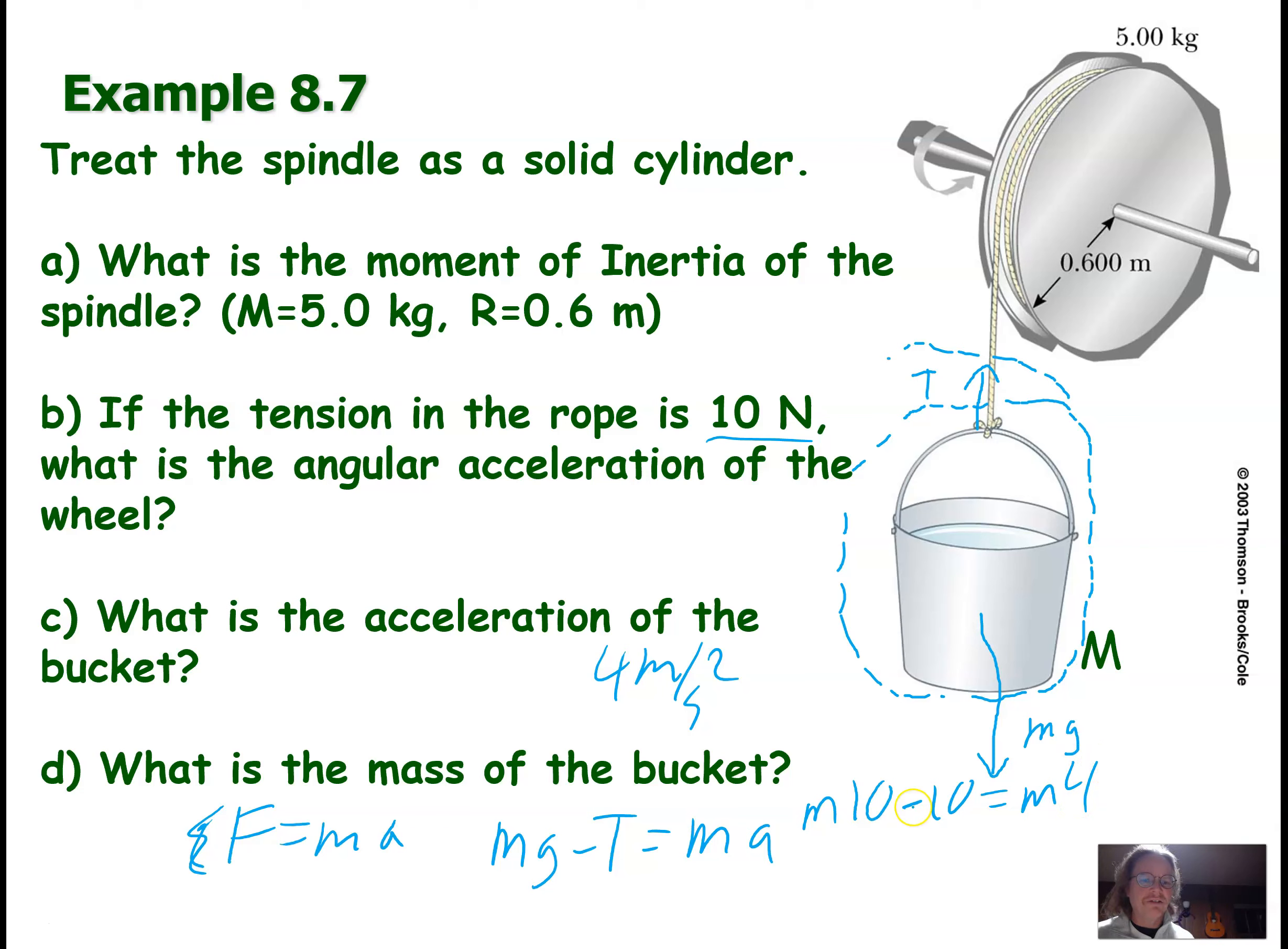Alrighty, so what I'm going to do is add the 10 to that side, subtract the M4 over here. So I've got an M6 left over equals 10. So I'm adding the 10 to both sides, subtracting the M4 on both sides.